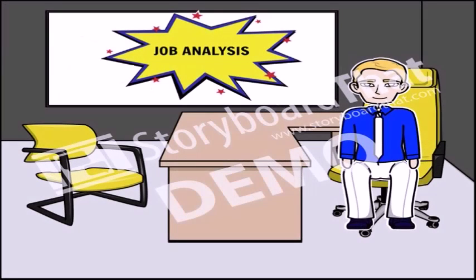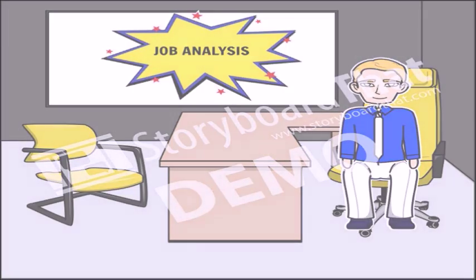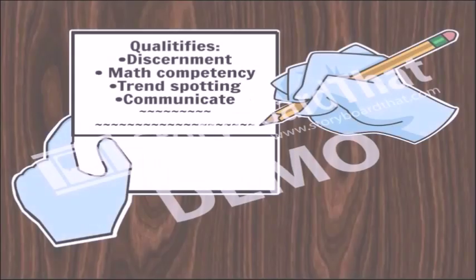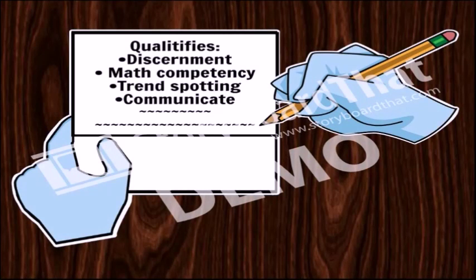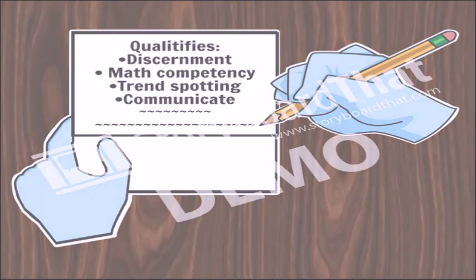However, this arrangement is just temporary because the four new members must become real research assistants. This is not enough to know who is the right person for the position, so William decides to use job analysis. Job analysis is a process that determines the scope and depth of a job and the required skills, abilities, and knowledge that people need to do the job. He lists the qualities of a research analyst: discernment, math competency, trend spotting, and communication.